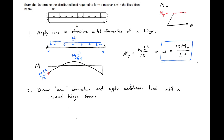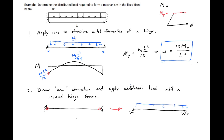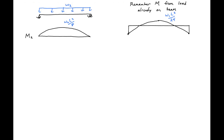We'll next draw our new structure with hinges at the ends and apply an additional load until the second hinge forms. Our fixed-fixed beam with hinges at the ends is just a simply supported beam. We'll then apply an additional distributed load W2 until we have formation of a second hinge at the middle of our beam.